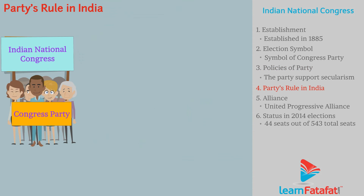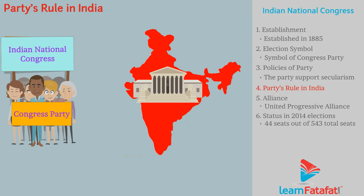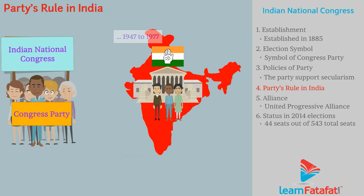Party's Rule in India. The party worked as the ruling party from independence, i.e., 1947 to 1977. Again, it established its rule from 1980 to 1989.